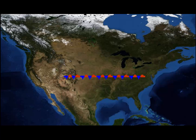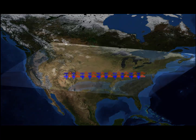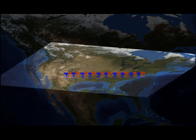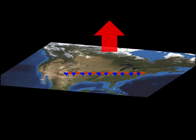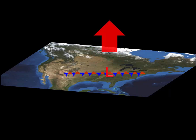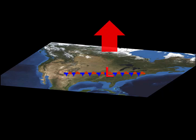To understand this a little further, let's tilt the map. For various reasons, at one point or another, air may start to rise along this boundary. The rising air will produce a surface low pressure.